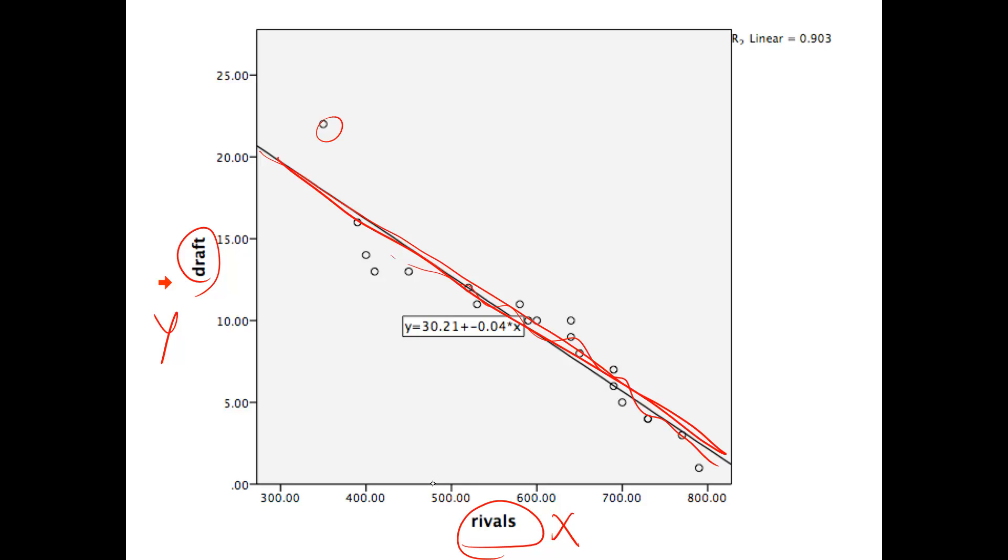What you see is that as their goodness score, so rival score is like how good you are, goes up, the draft pick position goes down, which makes sense, because the higher your score, the better rated you are, the faster you're going to go in the draft. Here's the regression equation right here: 30.21 minus .04X. That indicates there's a negative relationship between the variables.